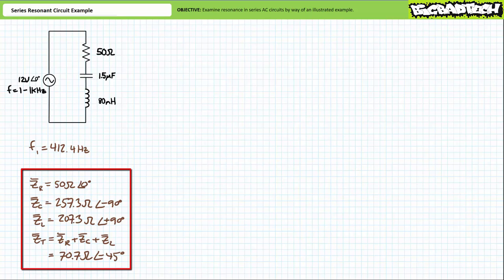At the lower half power frequency of 412.4 hertz, the 50 ohm resistor remains an impedance of 50 ohms at an angle of zero degrees. The complex impedance of the capacitor will be roughly 257.3 ohms at an angle of negative 90 degrees. The complex impedance of the inductor will be roughly 207.3 ohms at an angle of positive 90 degrees. Note that at less than the resonant frequency, the capacitor and inductor no longer present equal and opposite impedances. Total impedance for this series combination is ZR plus ZC plus ZL. Substituting in our given values, we find total impedance to be 70.7 ohms at an angle of negative 45 degrees. The total impedance seems to have a somewhat capacitive nature.